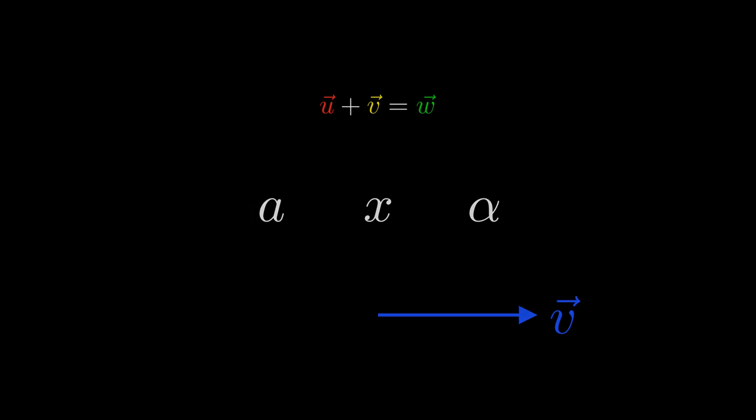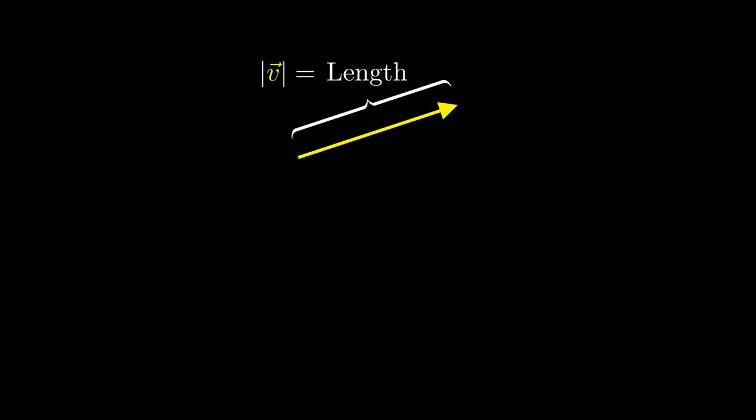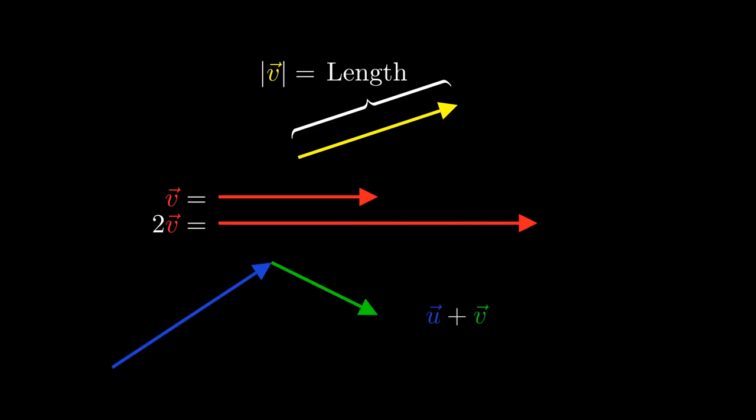At this point, we can't do much with vectors without defining operations that we can do on these vectors. In the next few videos, we will discuss three of the basic operations that you can do with vectors. Finding the length of a vector, changing the length of a vector or scaling, and adding two vectors together.